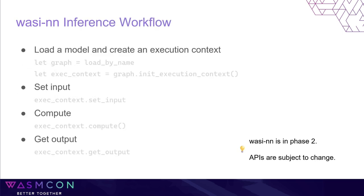This is a simplified workflow for WCN inference. Depending on your use case, it could be much more complicated than this. For example, you may need to prepare your data before setting it as an input tensor. To start an inference, firstly you need to load a model. Depending on the format of the model you have, the WCN runtime selects a backend for you. Then feed the input with the setInput API. After setting all input tensors, call compute to compute the inference. It may take a few seconds or even a few minutes to complete. Then you will be able to get the result by getOutput.